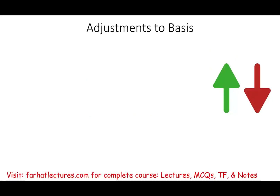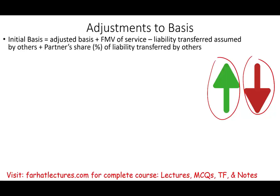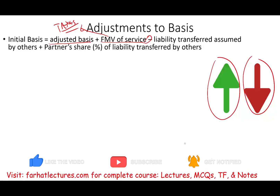Let's look at more items that could affect your basis upward or downward. Going back to the initial basis formula: it starts with the adjusted basis of property plus fair market value of services contributed for capital interest — because you paid taxes on those as ordinary income. Then you deduct the liability transferred assumed by others, and add your partner's share of liabilities transferred by others.